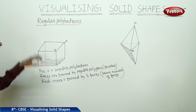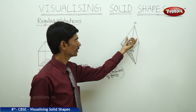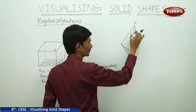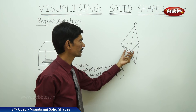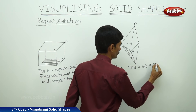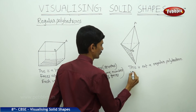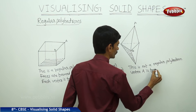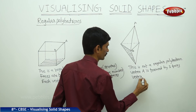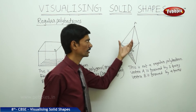So the cube is said to be a regular polyhedron. In the second figure, all faces are regular polygons, but vertex A is formed by three faces whereas another vertex is formed by four faces — the number of faces at each vertex is not the same. So this is not said to be a regular polyhedron.